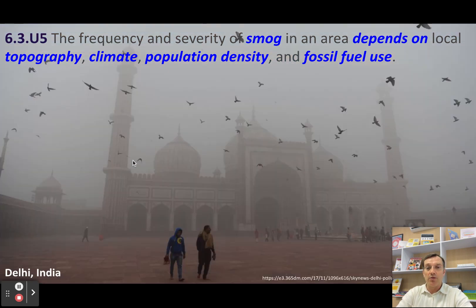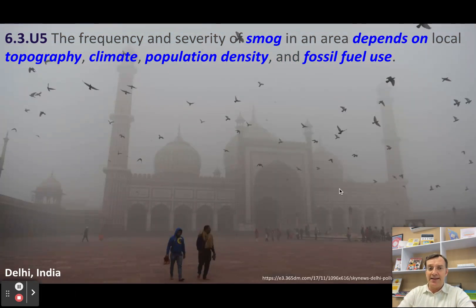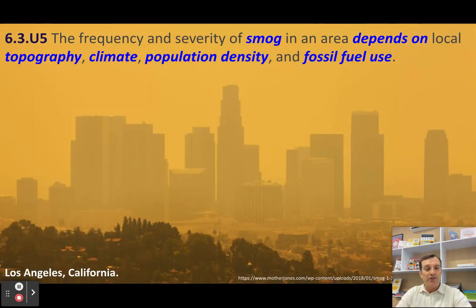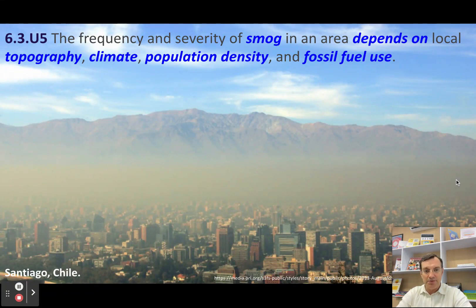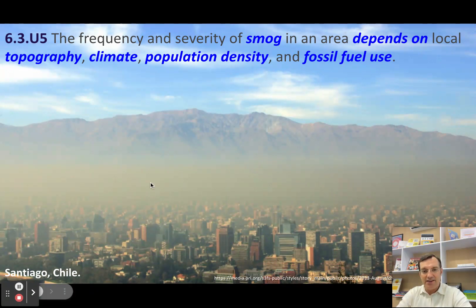Here you've got Warsaw, Poland. This is Delhi in India, and frankly this picture is not as bad as it frequently is. This is what Los Angeles always looked like when I was a kid growing up in the United States. And this is Santiago, Chile. Right here in the middle, you have this dense layer of really thick, nasty, brown photochemical smog.